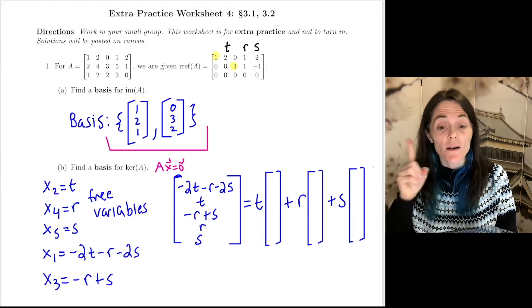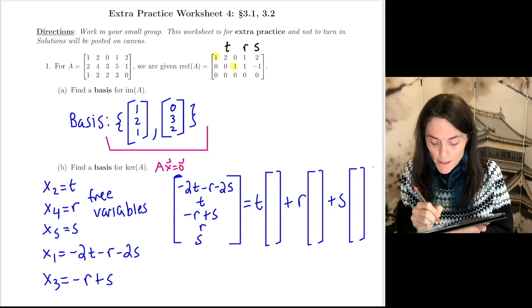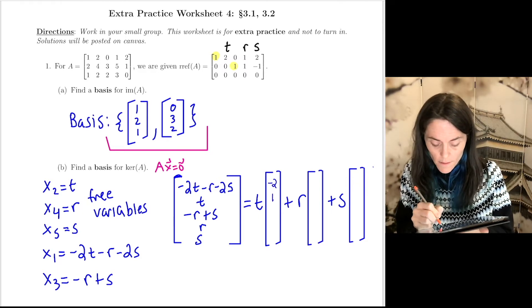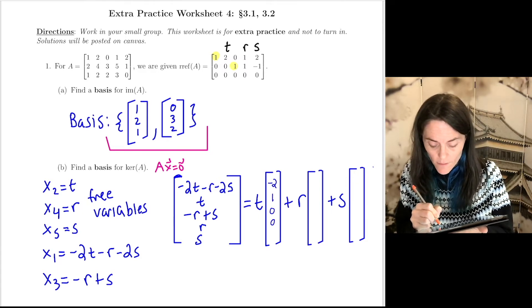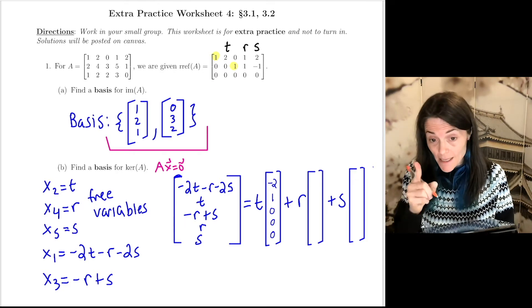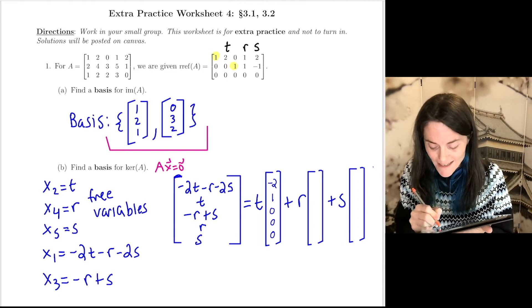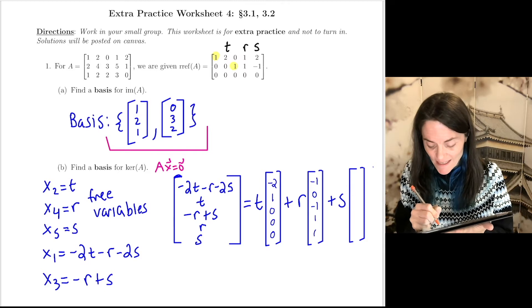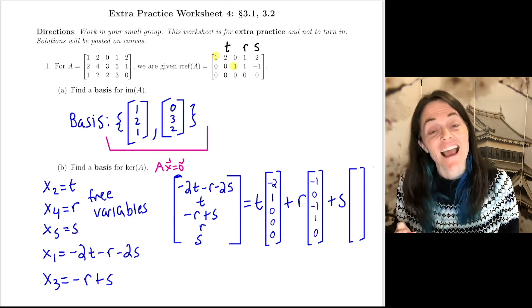This will be T times something plus R times something and then plus S times something. We have T times the vector minus 2, 1, 0, 0, 0. Then we have R times minus 1, 0, minus 1, 1, and 0.